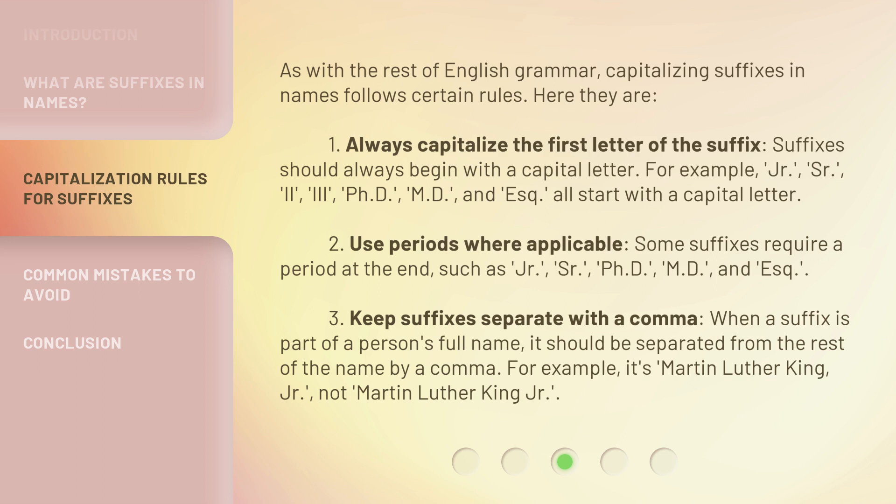Rule 2: Use periods where applicable. Some suffixes require a period at the end, such as Jr., Sr., PhD., MD., and Esq. Rule 3: Keep suffixes separate with a comma. When a suffix is part of a person's full name, it should be separated from the rest of the name by a comma. For example, it's Martin Luther King, Jr., not Martin Luther King Jr.